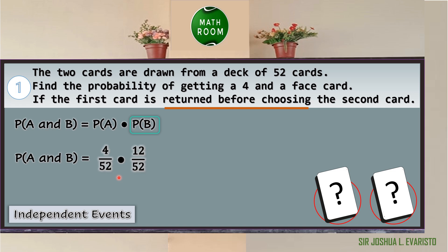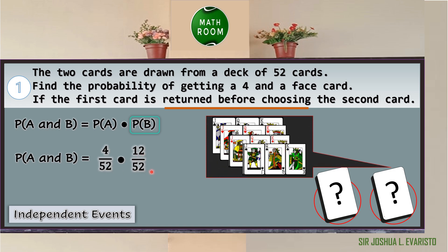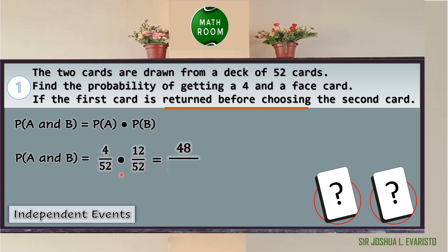The probability of B, getting a face card, is 12 over 52, since we have 12 face cards out of 52. Notice the denominator is still 52 because we returned the first card. Now, 4 × 12 = 48, and 52 × 52 = 2704. Simplifying 48/2704 by dividing both by 16 gives 3/169. Therefore, the probability of getting a four and a face card is 3 over 169.